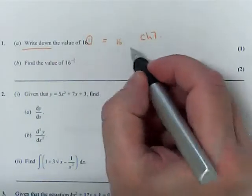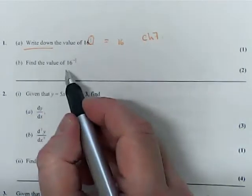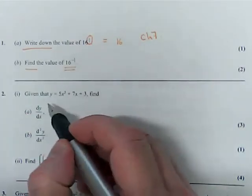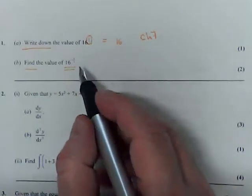Which will give you an answer. And then in part b, we've got to find the value of 16 to the power minus 3 over 2. This is two marks, a bit of methods needed here.